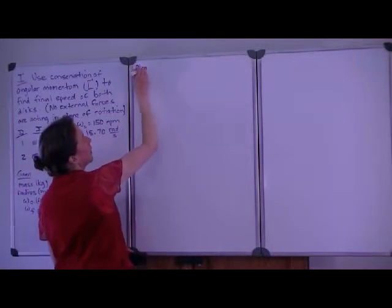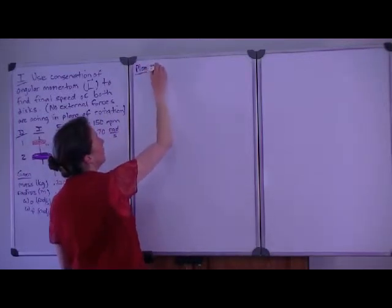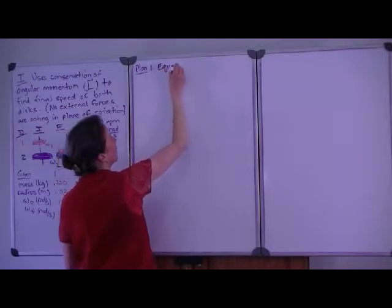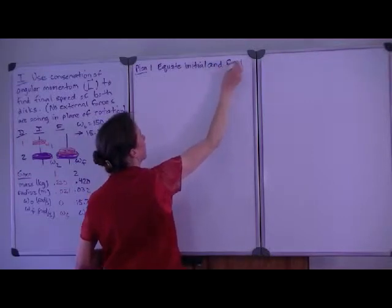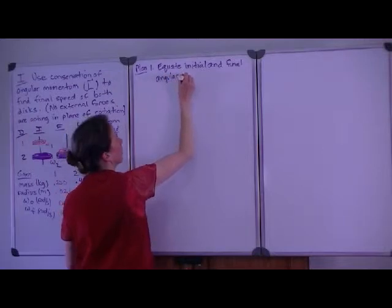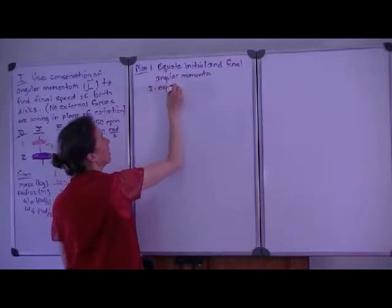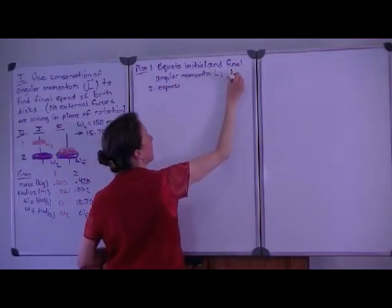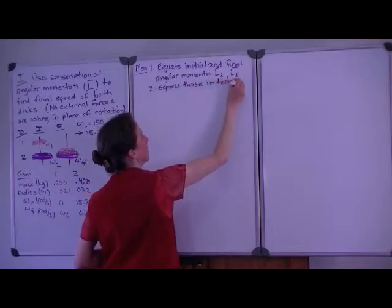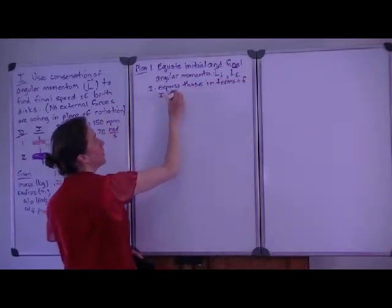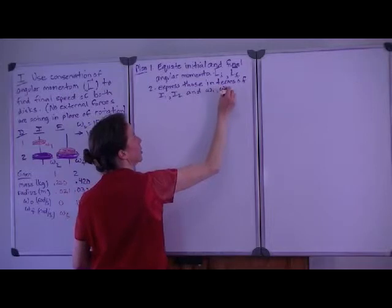As we make a plan to solve this problem, we want to equate the initial and final momenta. But we need to then express those. So that's L initial and L final. We need to express those in terms of moments of inertia, so that would be a moment of inertia of disk 1 and disk 2, and omega 1, omega 2, and omega final, the three angular speeds that we're interested in.